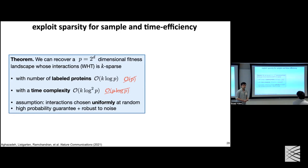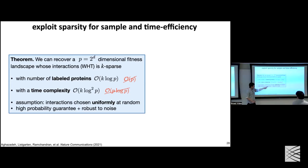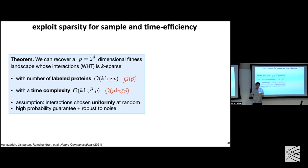On the question of what happens when only low-order terms are non-zero: the underlying assumption for the basic result is that Fourier coefficients are drawn with equal likelihood regardless of order. If you assume the function is actually low-degree — say at most sixth-order interactions — you get another logarithmic advantage on top, which I'll discuss in the last few slides.